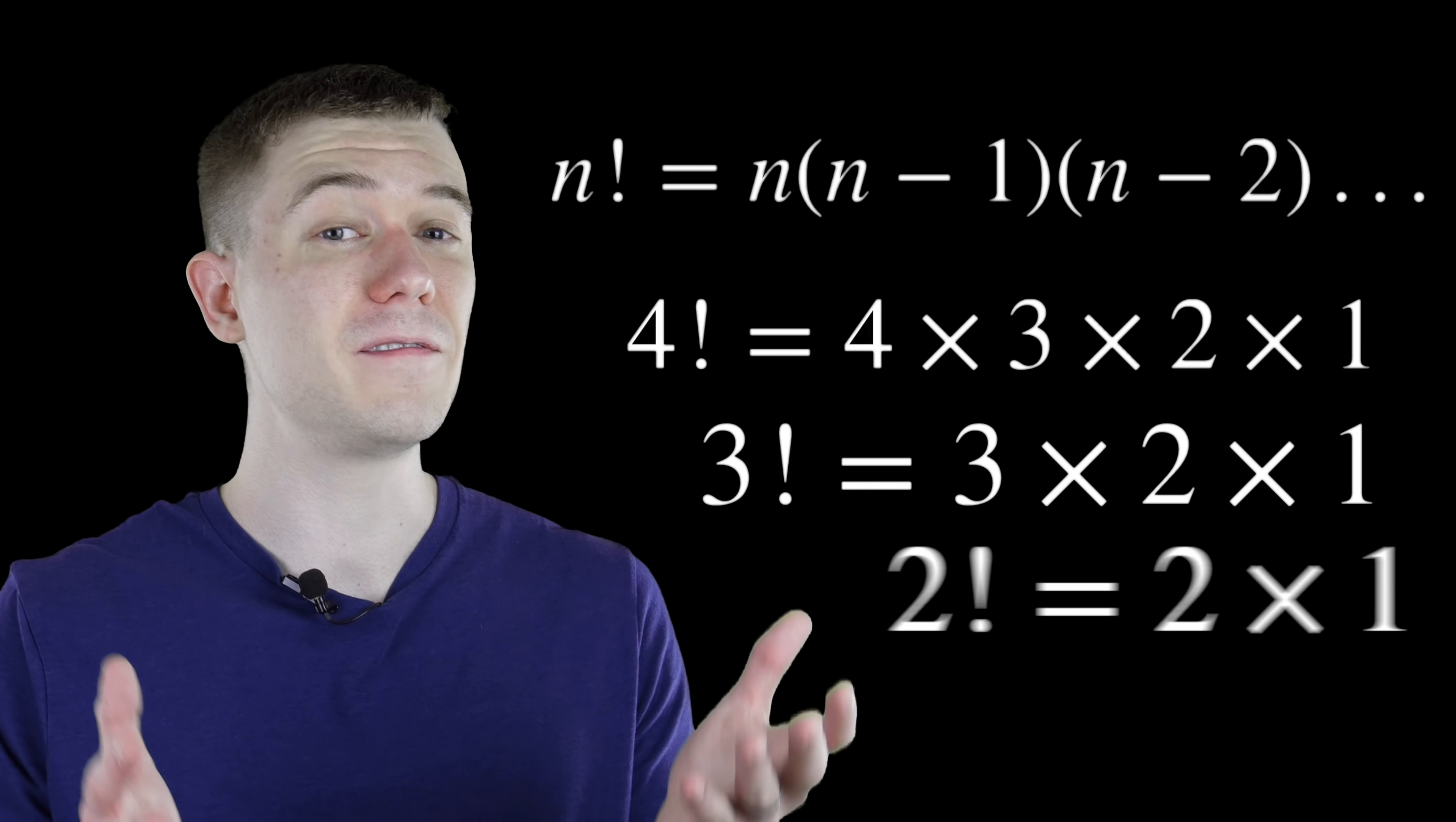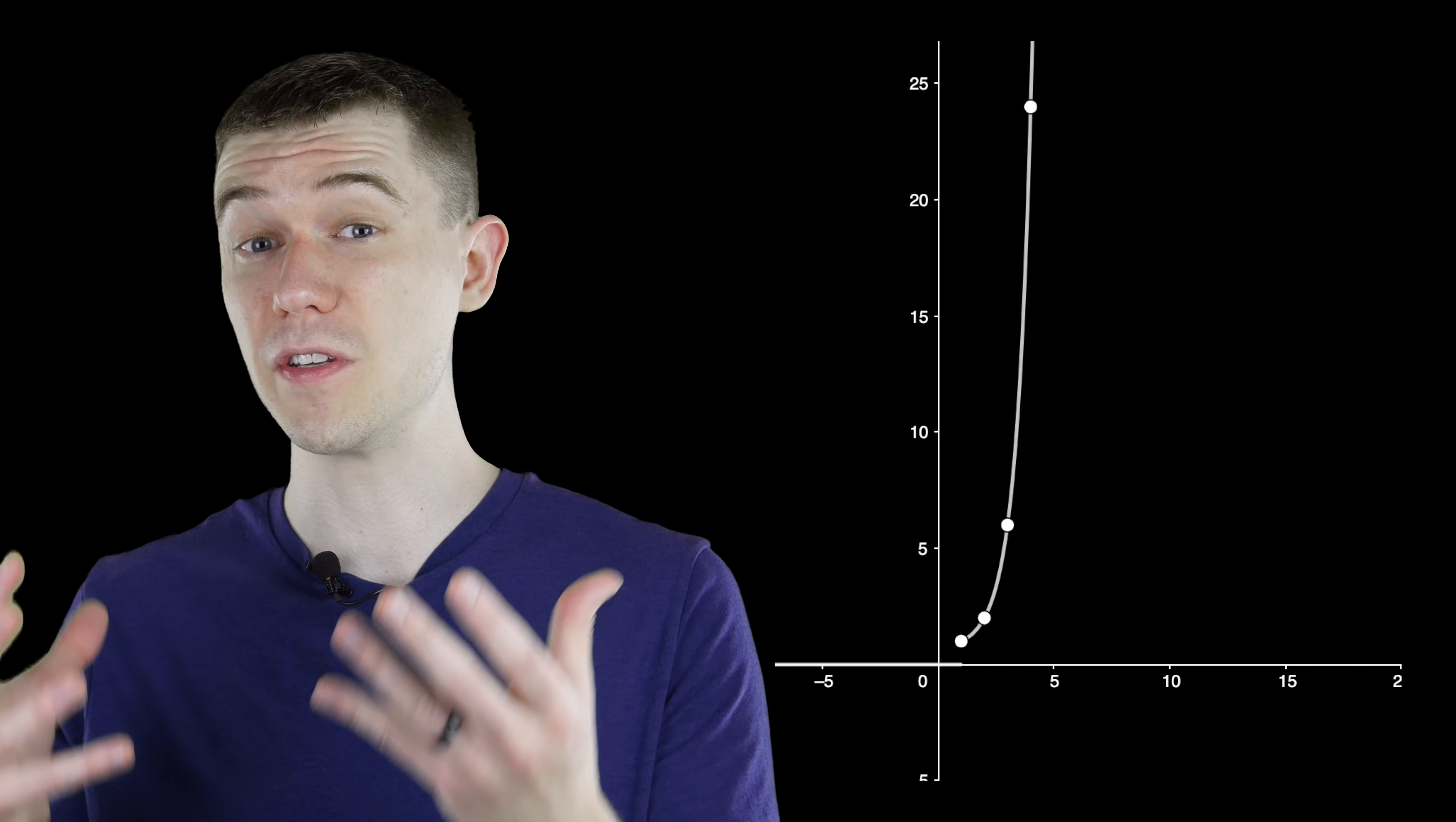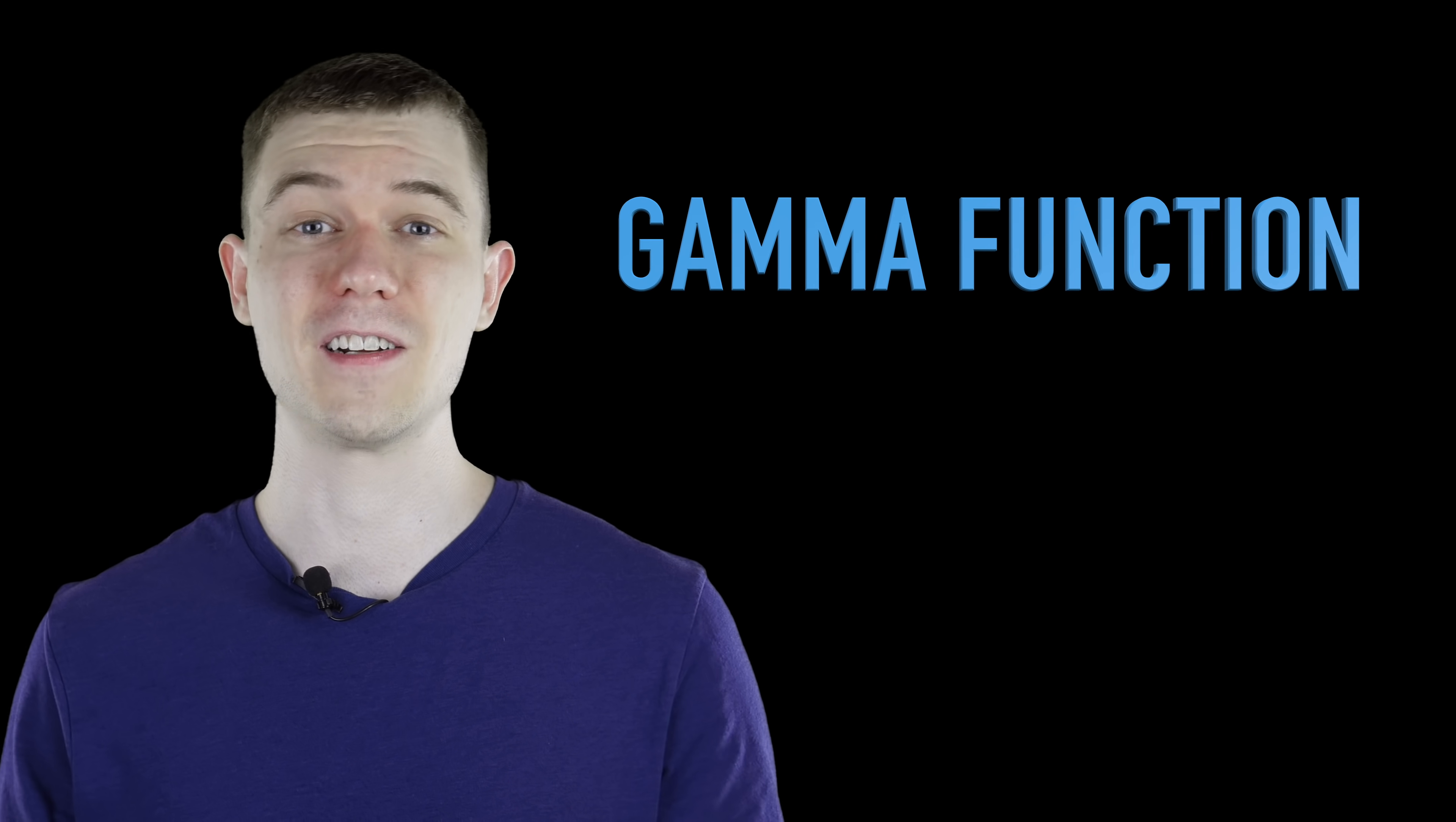If you wanted to graph n factorial, it would definitely not be a continuous function and not a great candidate for derivatives. So it would be really nice if we could connect all of those points and have a nice continuous function that we could take the derivative of. This is an excuse for me to talk once again about the gamma function, which generalizes the factorial function.